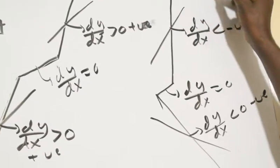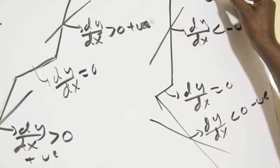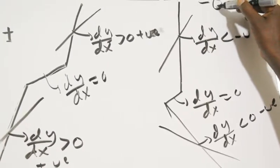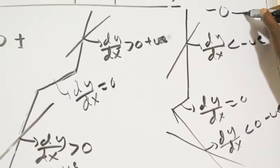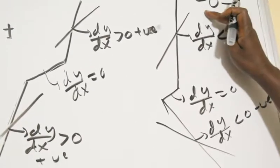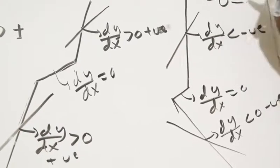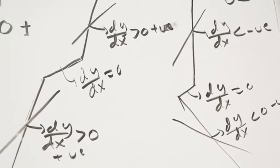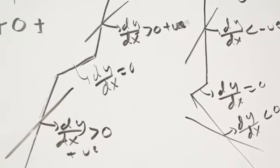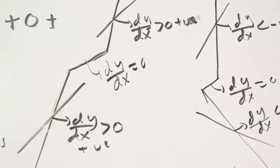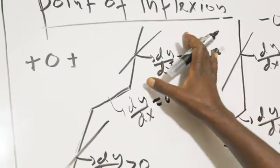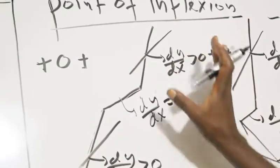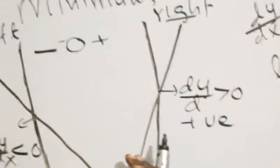Going from negative to zero to negative — that is neither a maximum nor a minimum. It is a point of inflection. We place signs in each region of the sign table, perhaps identifying a point of inflection.